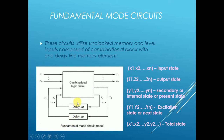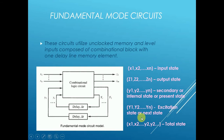Each line has a delay element — that is exactly what is meant by 'one delay line memory element,' and this delay is of delta-t. The legend used is: small x denotes the input state, capital Z denotes the output state, small y denotes the secondary or internal or present state, capital Y denotes the excitation state or next state, and x1, x2, y1, y2 together describe the total state.